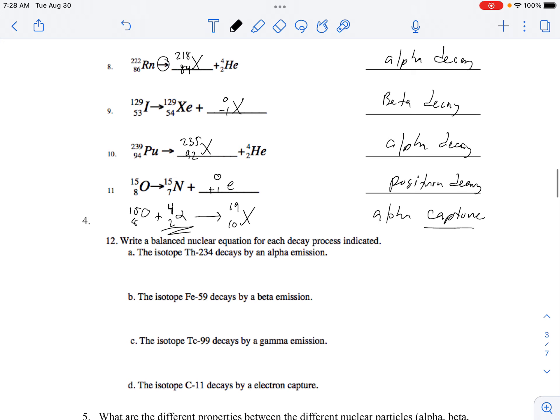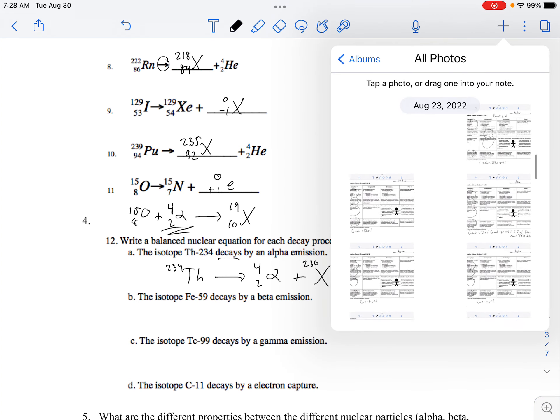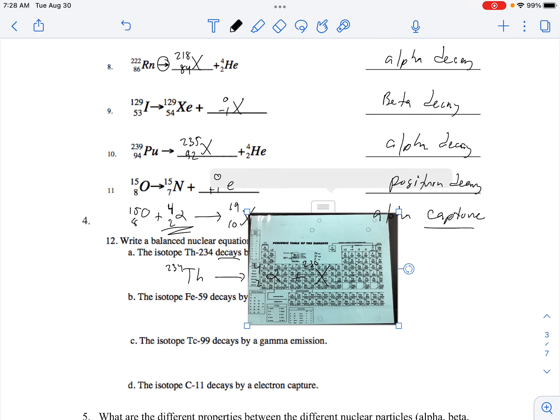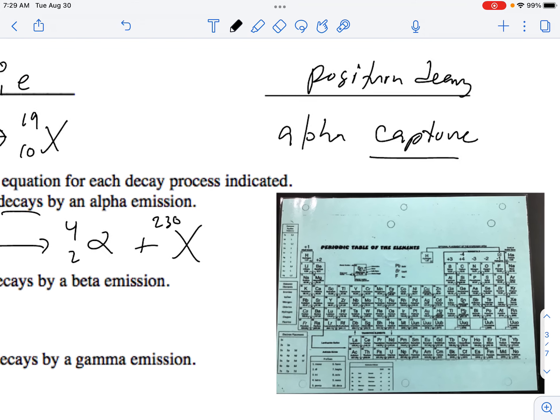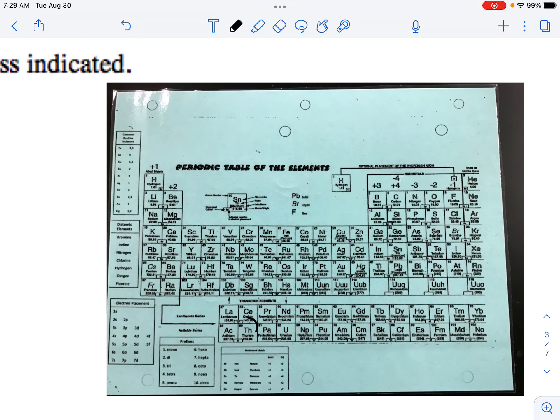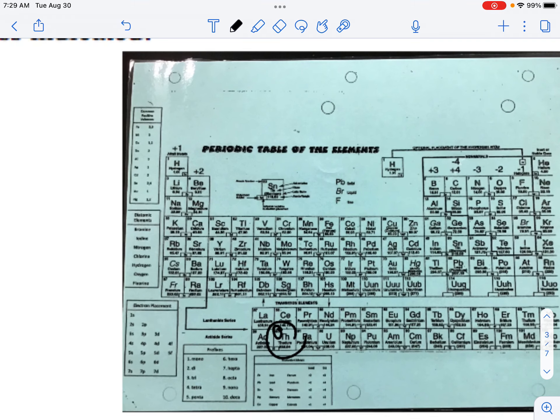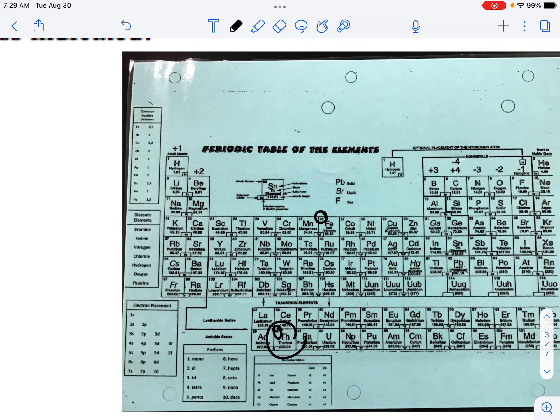Moving on, continuing on. Thorium-234 decays by alpha. Decays mean that the decay is in the products, so 230 and thorium. Thorium is right here, so 90. The atomic number is 90, so this would have to be 88. That number, the dash number, that is atomic mass. We have to find the atomic number, which is the whole number, so 26 for iron.